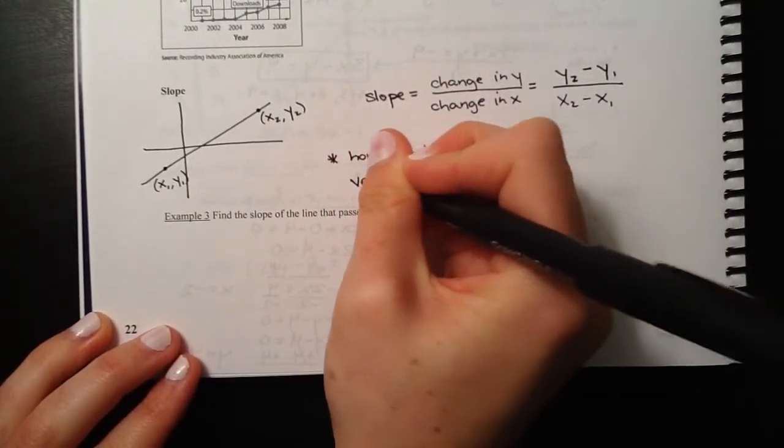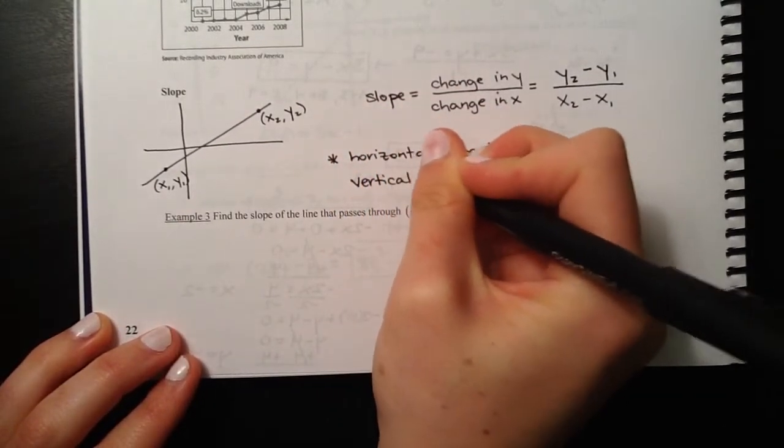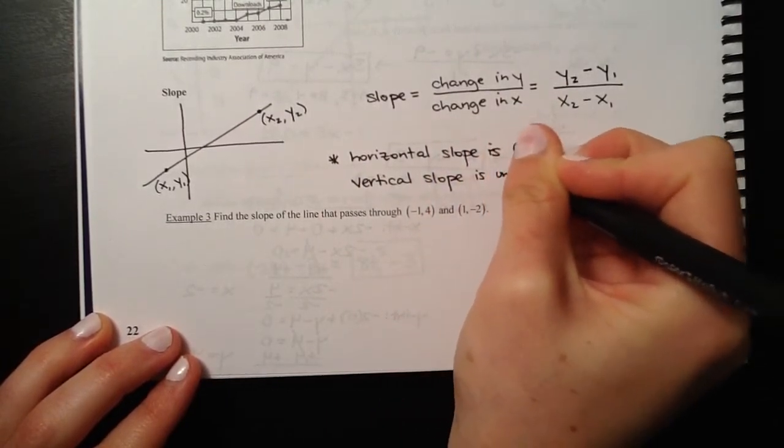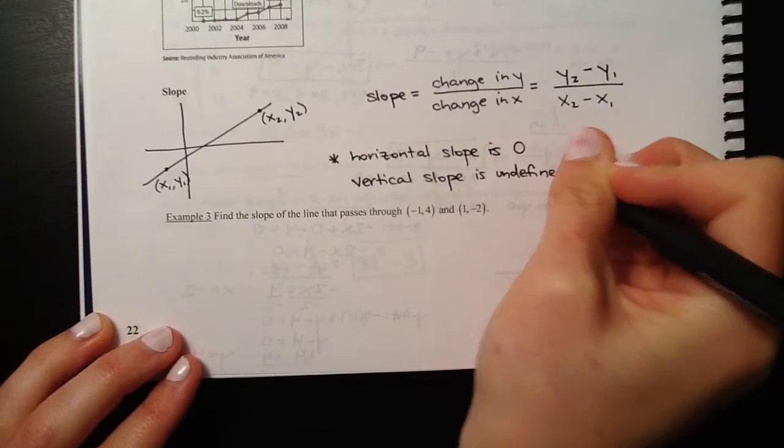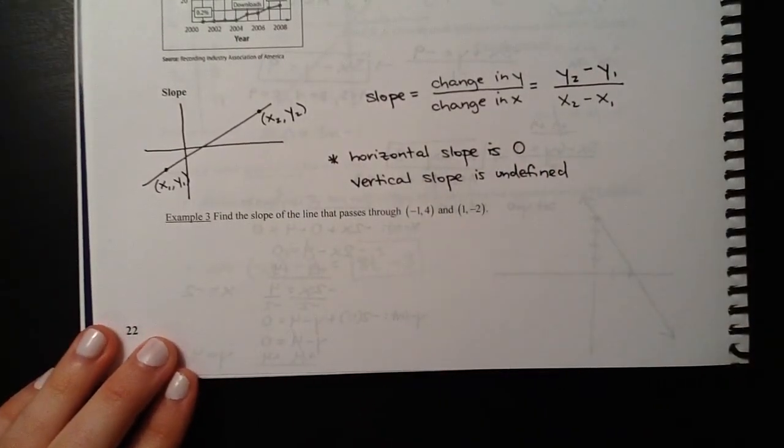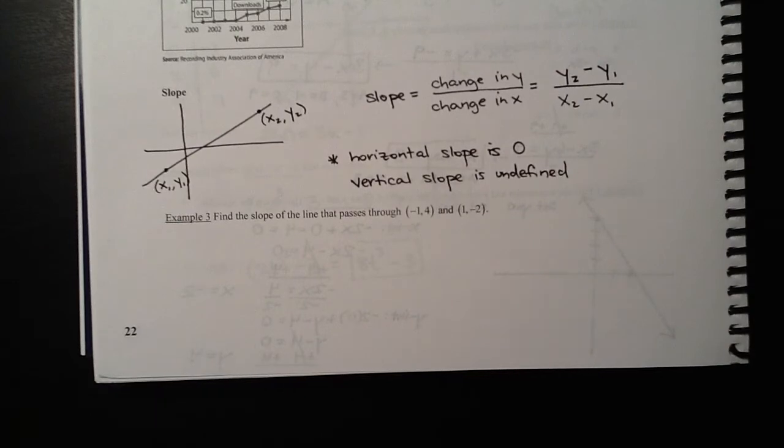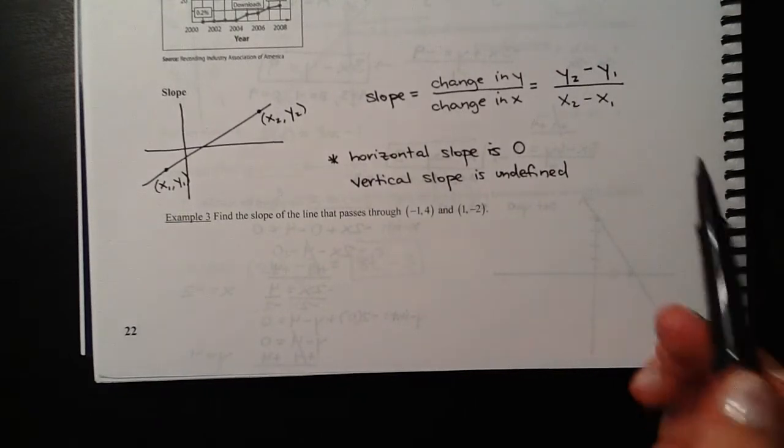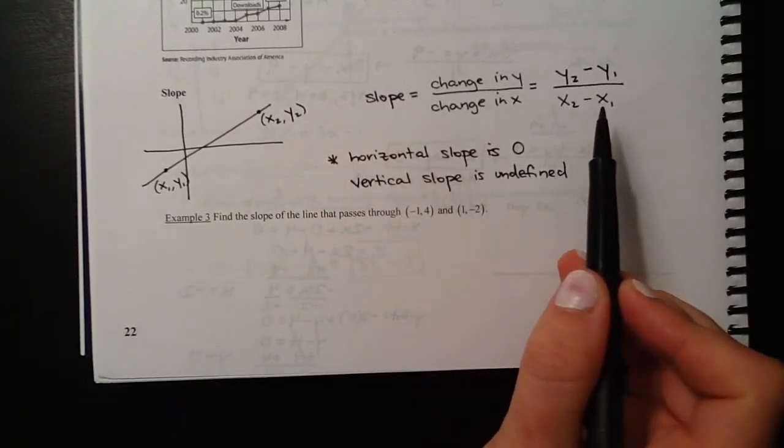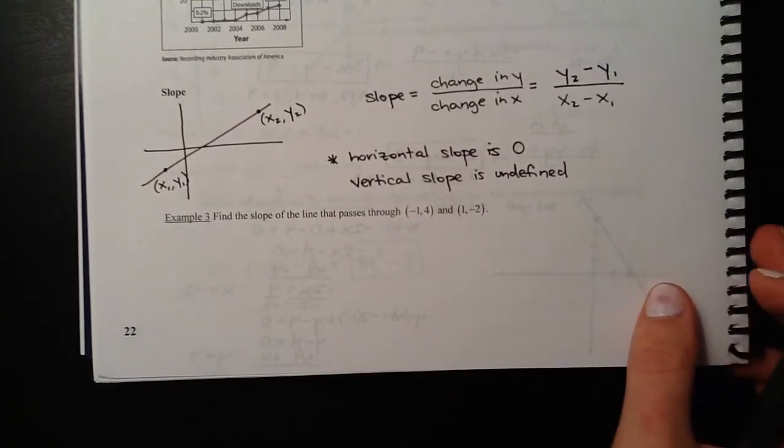If you have a vertical line, we say that's undefined. Those are two special cases. You could have a horizontal line or a vertical line. Horizontal lines have a slope of 0, vertical lines have a slope that is undefined. If you were going straight up and down, there's no change in x, so your denominator would be 0, which of course is not something that we can do.